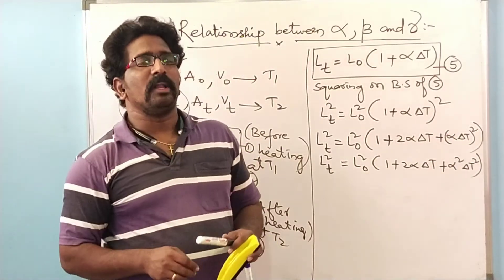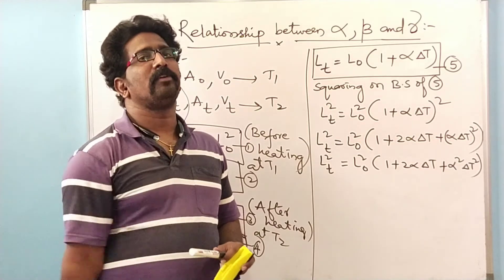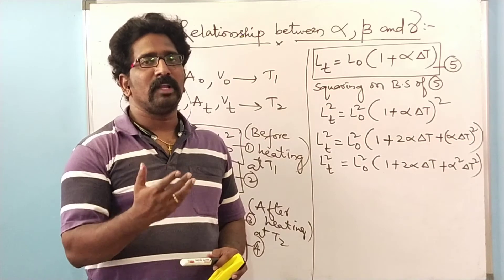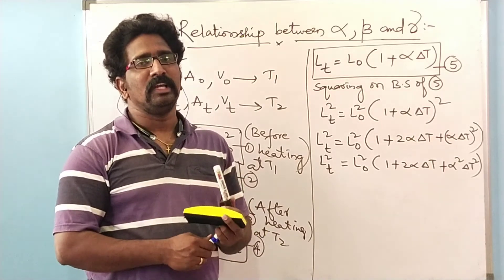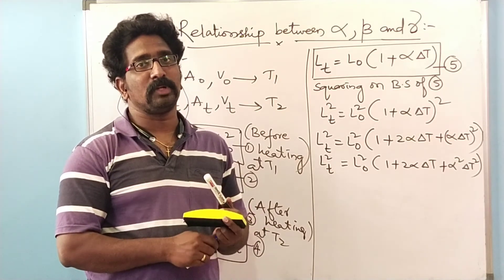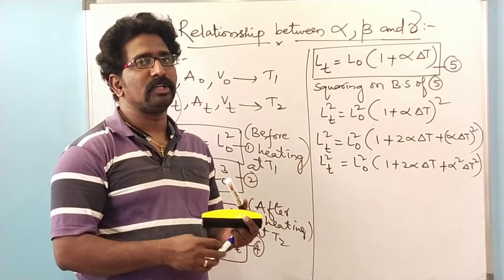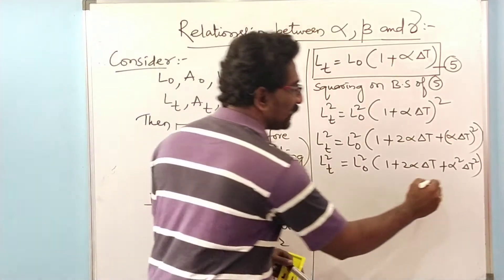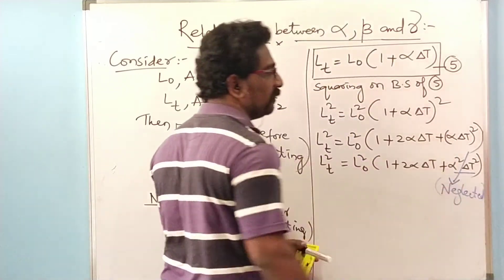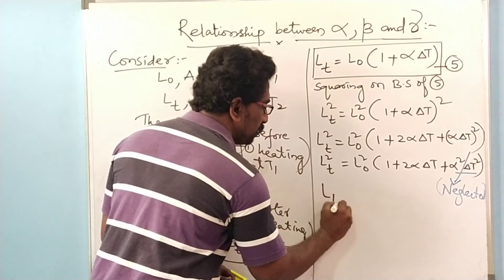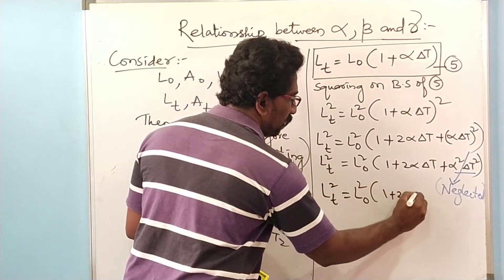We know that the value of alpha is very small — always in the order of 10 to the power of minus 5 or minus 6. So alpha squared would be on the order of 10 to the power of minus 10 or minus 12, which is negligibly small. Therefore we can neglect the alpha squared term, and the equation becomes L-T squared equals L-naught squared times (1 + 2 alpha delta T).